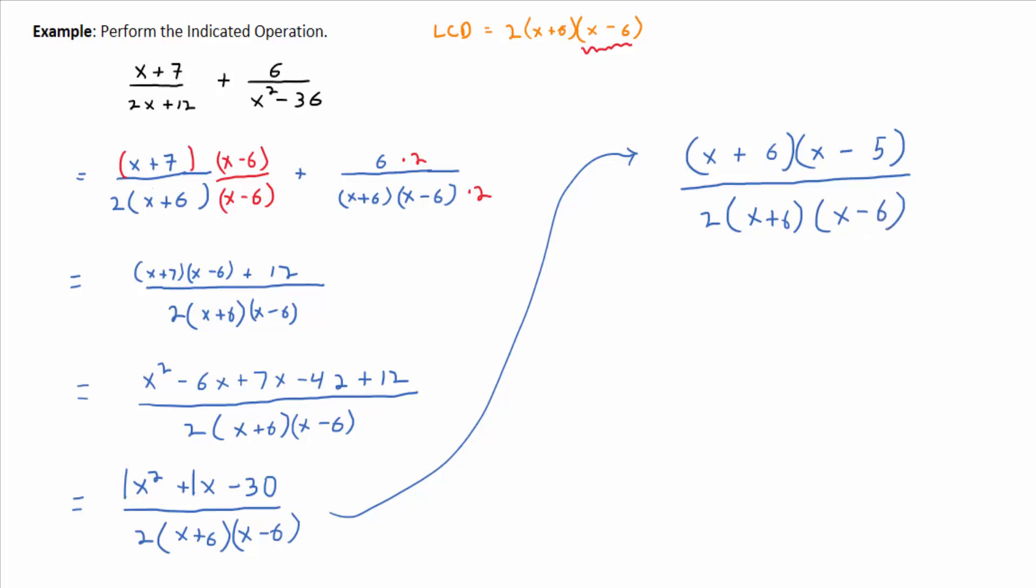And then in the denominator we have 2 times x plus 6 times x minus 6. And then what's the common factor that's going to go away? x plus 6 divided by x plus 6 makes one. Notice the reason we're able to do that division is the operation in the numerator and denominator between the parentheses is multiplication. That's what allows us to do this. Then clean it up, so we get just x minus 5 on top over 2 times x minus 6 on the bottom.